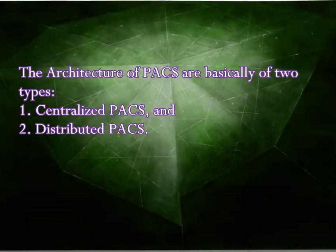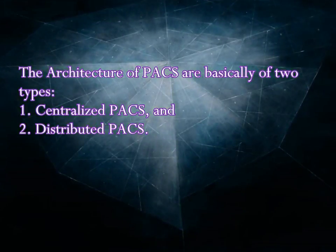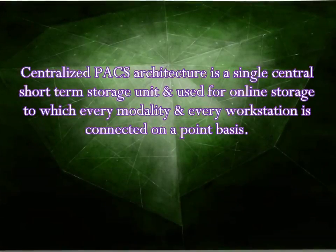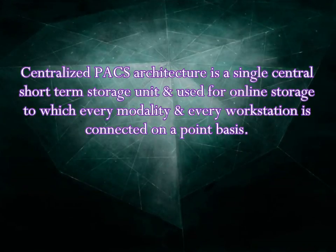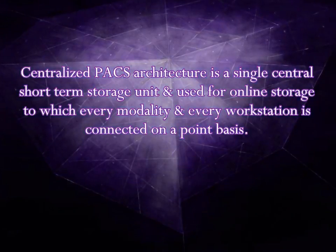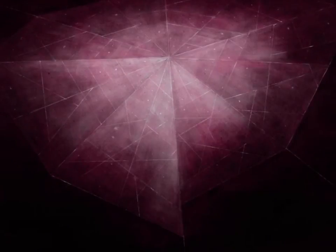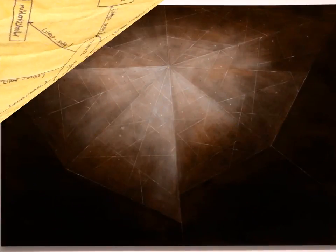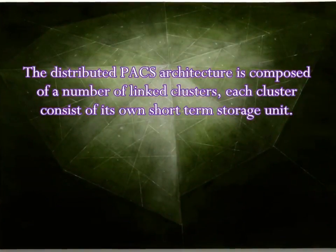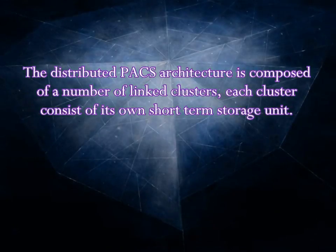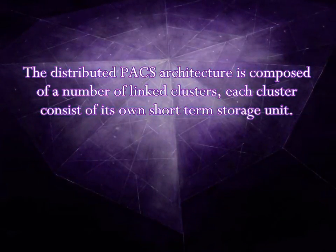The architecture of PACS is basically of two types: centralized PACS and distributed PACS. Centralized PACS architecture has a single central short-term storage unit used for online storage, to which every modality and every workstation is connected on a point-to-point basis. The distributed PACS architecture is composed of a number of linked clusters, each consisting of its own short-term storage unit.